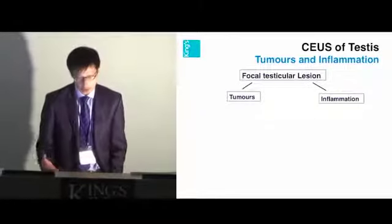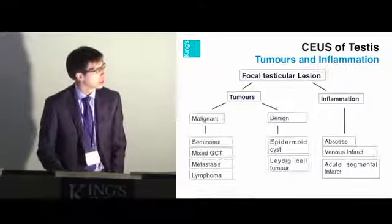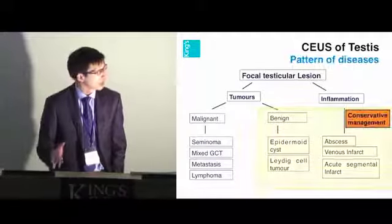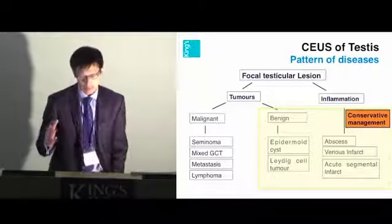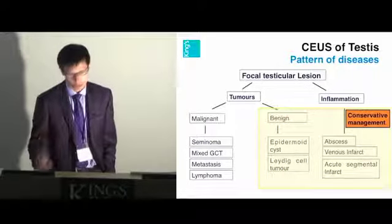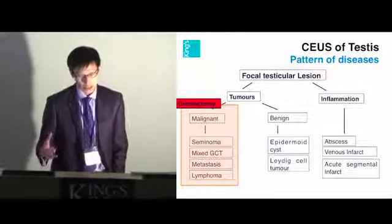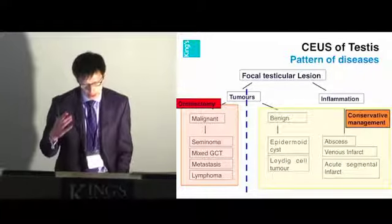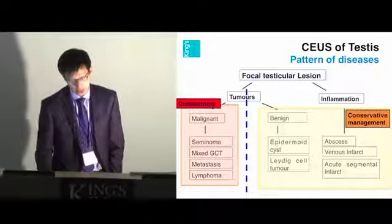The two areas we're looking at are tumors and inflammations. Where benign pathology is suspected, the patient may have conservative management with testicular sparing surgery or watchful waiting. On the malignant side, a more likely management pathway would be orchidectomy. When ultrasound findings are uncertain or misinterpreted, it may result in unnecessary orchidectomy.